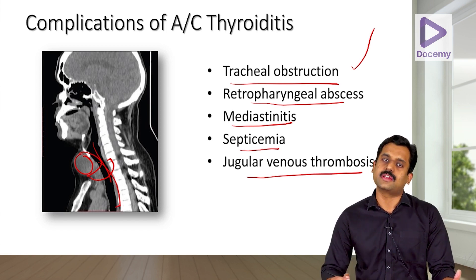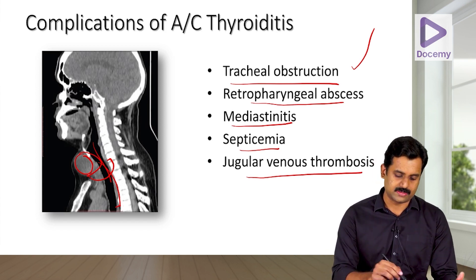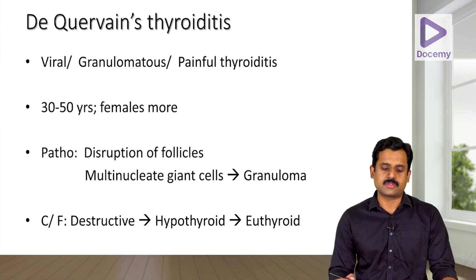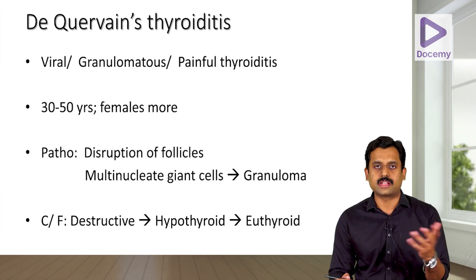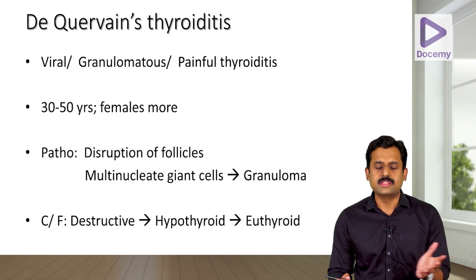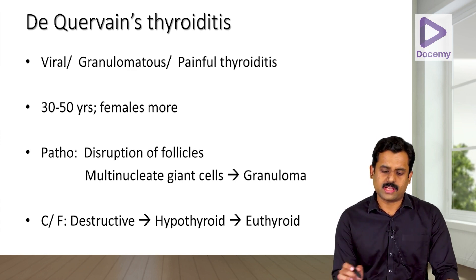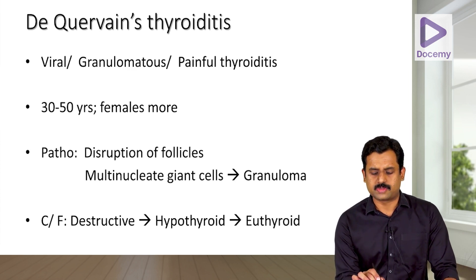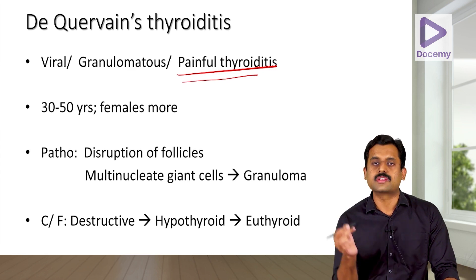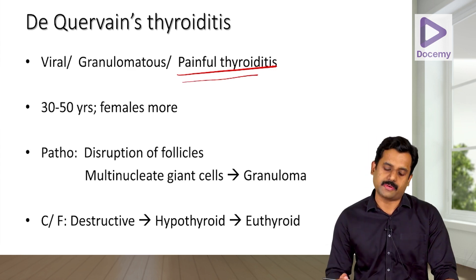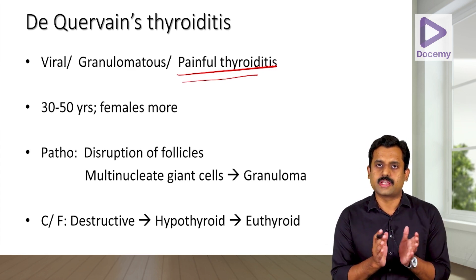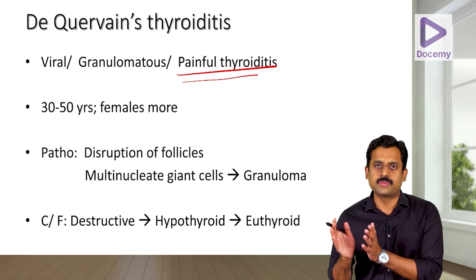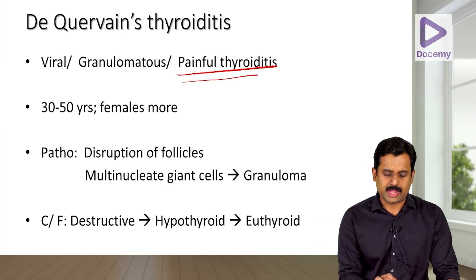Moving to de Quervain's thyroiditis — also called viral thyroiditis or granulomatous thyroiditis. This is a subacute thyroiditis and usually presents with pain, which is why it is called painful thyroiditis. It is more common in females aged 30 to 50 years.